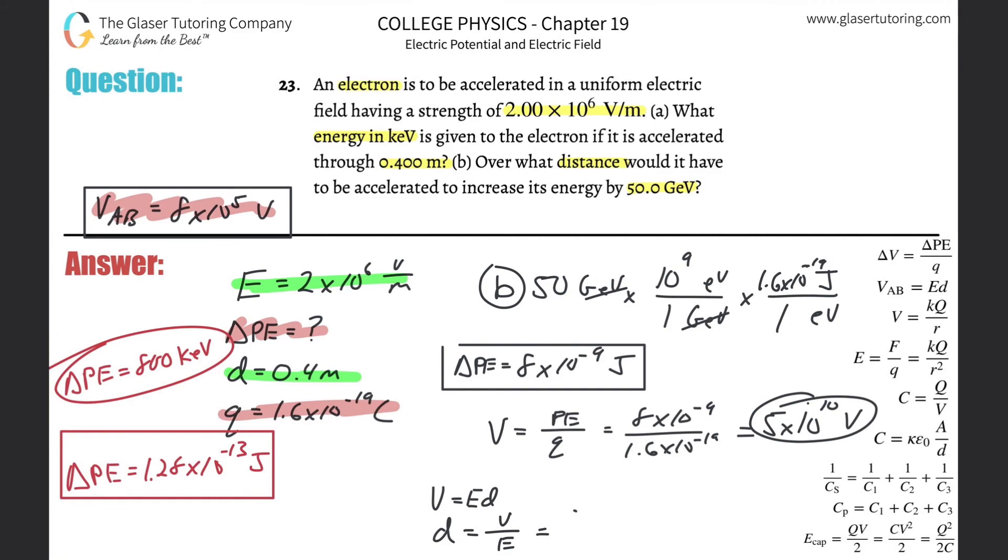So we get that. And now I'm going to plug in the voltage 5 times 10 to the 10th divided by that constant electric field, which was 2 times 10 to the sixth. And let's see, divide by 2 times 10 to the sixth. And that works out to be 25,000. So 2.50 times 10 to the fourth. And that's going to be in terms of meters. So that's how far it would have to be accelerated.